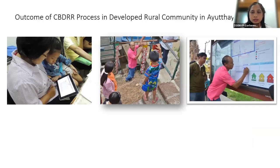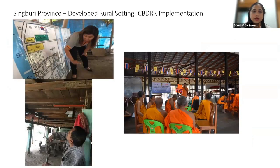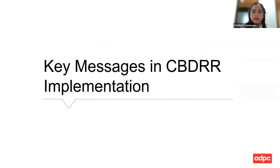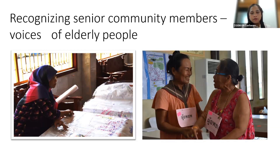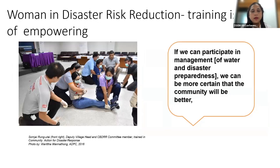Here is a sample of an early warning system in the Uthai Thani province — the engagement of monks and temples who were engaged to learn about flood safety and implement community-based disaster reduction. The key message to highlight: please recognize senior community members and the voice of elderly people. Consider them not only as a vulnerable group but also as a very important key element for implementation — engage with them from the beginning. Women in disaster reduction, if given a platform to join and participate, will be a key empowering activity.